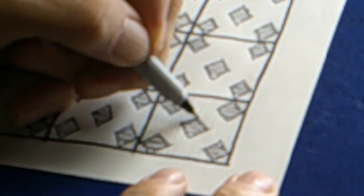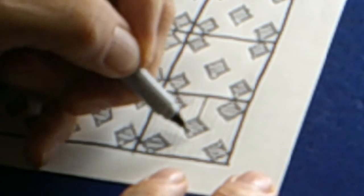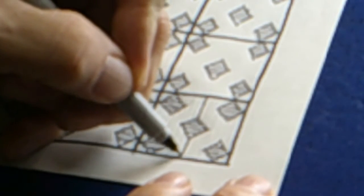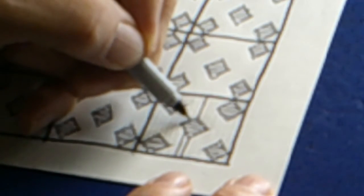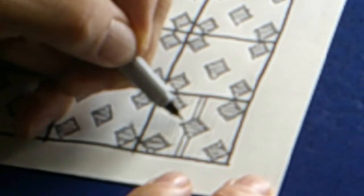Alrighty, the next step for this pattern: we're going to draw vertical lines outside of our diamonds, trying to evenly space them.